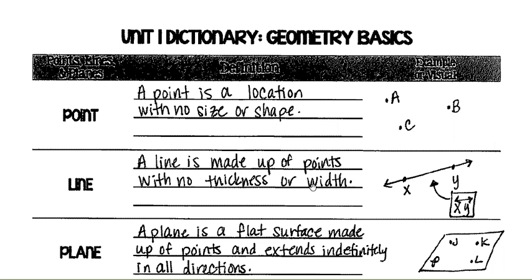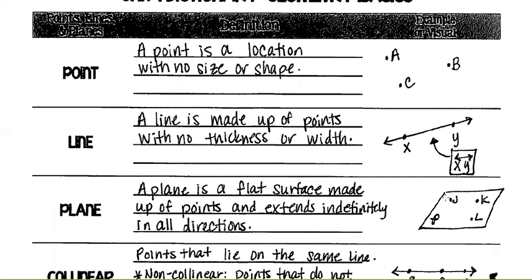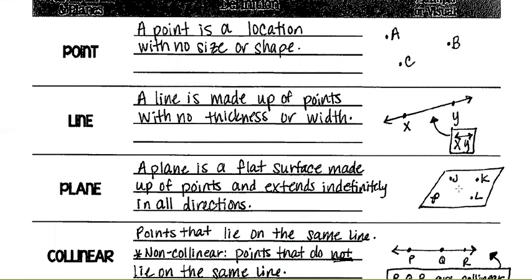Plane: a plane is a flat surface made up of points and extends indefinitely in all directions. It's not like an airplane — a plane is like a piece of paper. That's the best way to describe it. So if you have a piece of paper or a post-it next to you, that is an example of a plane.